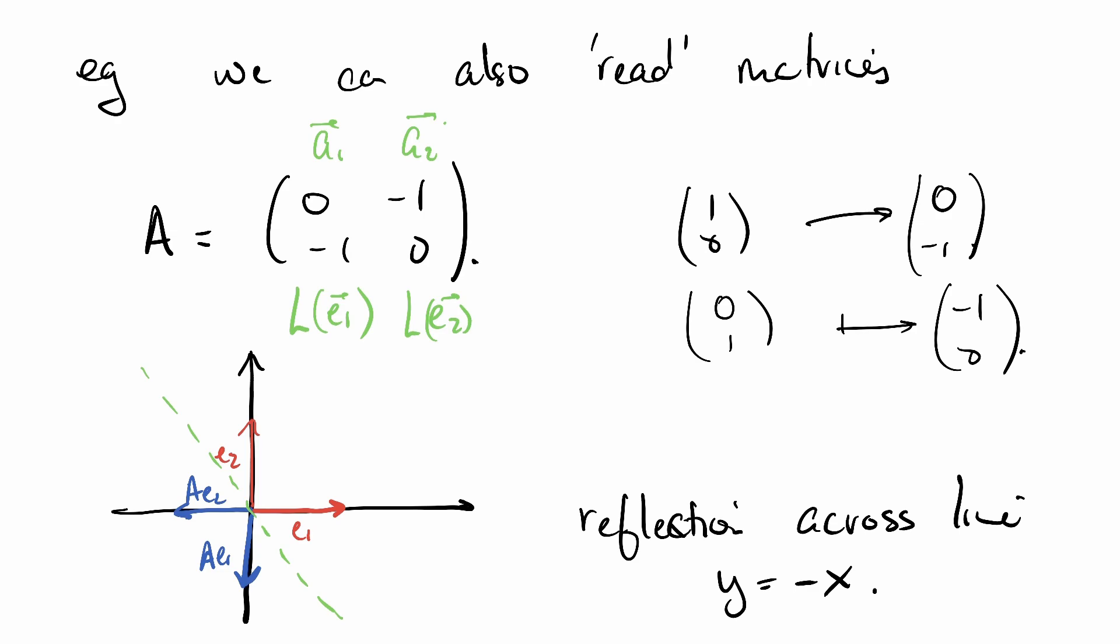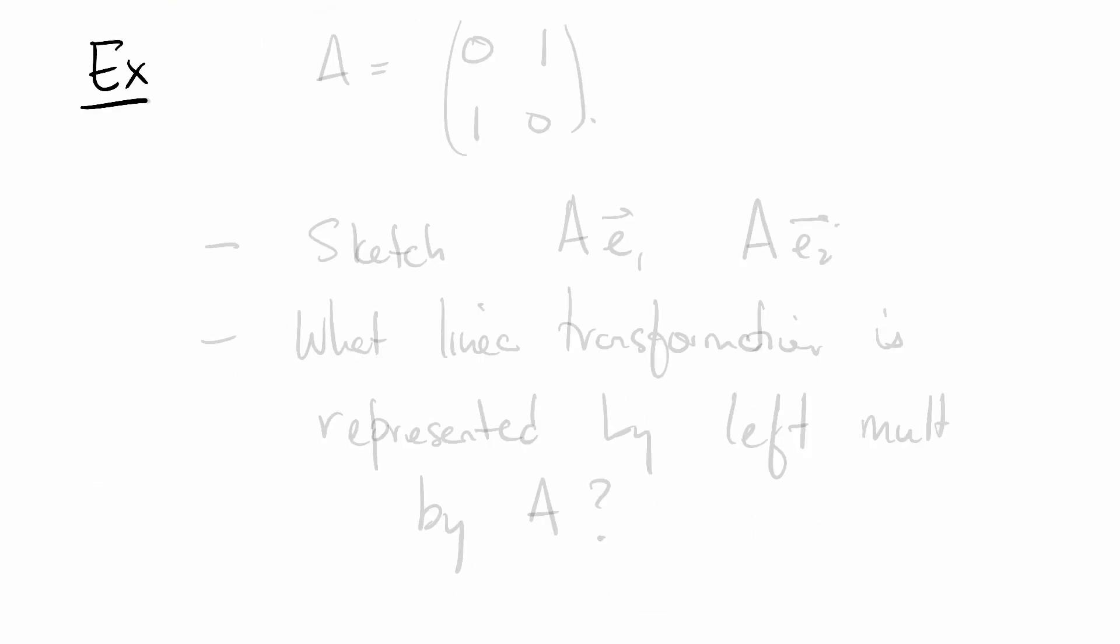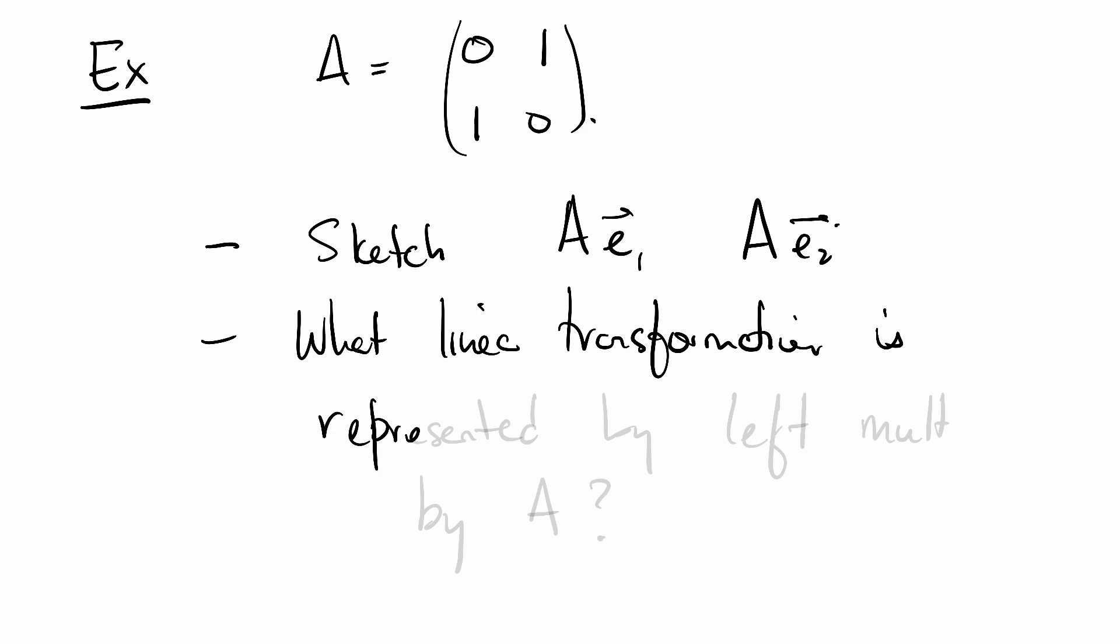Here's an exercise for you. Say A is the matrix (0, 1; 1, 0). Sketch what A does to E_1 and what A does to E_2, and then deduce what linear transformation is represented by left multiplication by the matrix A. Describe it for me.